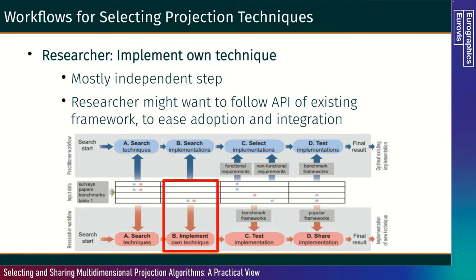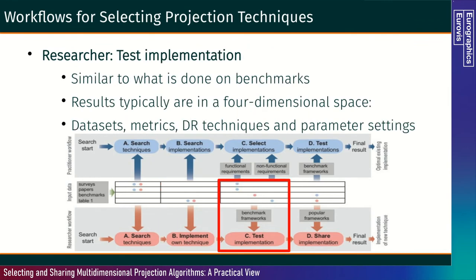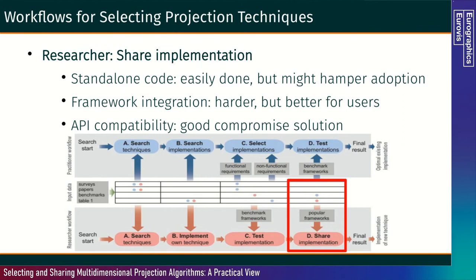Researchers need to implement their own technique, which is a mostly independent step. They need to test their implementation, similar to what is done in benchmarks, and the results typically span a four-dimensional space: results over different datasets, metrics, techniques, and parameter settings. Then they need to share their implementation. You can share code mainly in three ways: standalone code, which is easily done but might hamper adoption; integration with an existing framework such as Scikit-learn, which is harder but much better for users; or some kind of API compatibility, which in many cases is a good compromise.